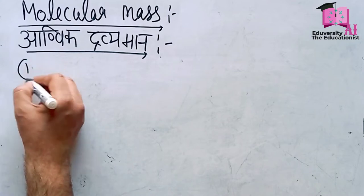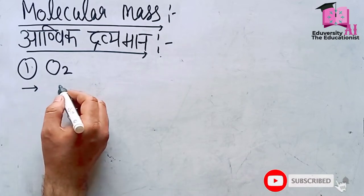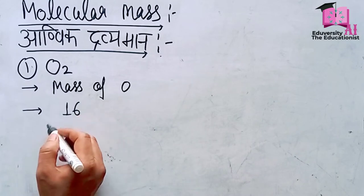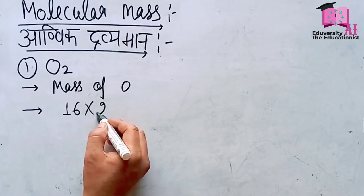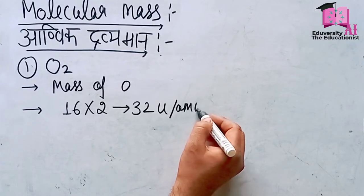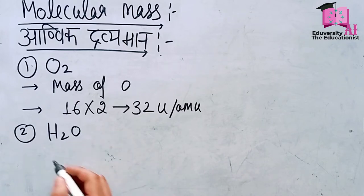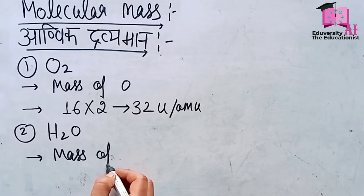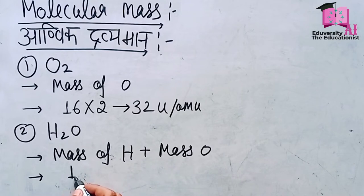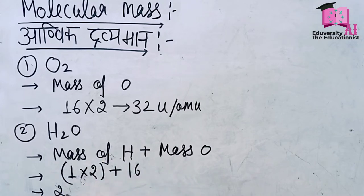For example, first example, let's take oxygen molecule O₂. To calculate the molecular mass of oxygen, the formula is: mass of oxygen. Oxygen's mass is 16, and in one molecule there are two atoms of oxygen, so we multiply by 2. This gives 32 unified or atomic mass unit (AMU). Number two example: H₂O. If we calculate the mass of H₂O, mass of hydrogen plus mass of oxygen. In one molecule, hydrogen is 2, so 1 times 2, plus oxygen single atom is 16. 2 plus 16 equals 18 unified.